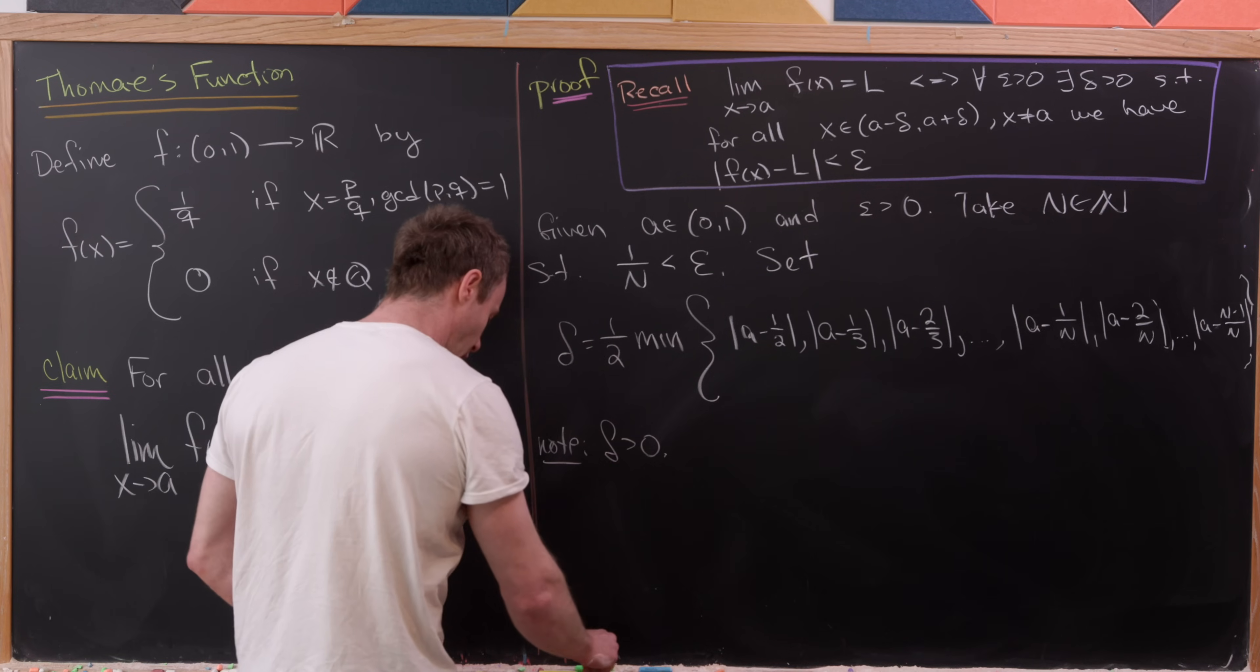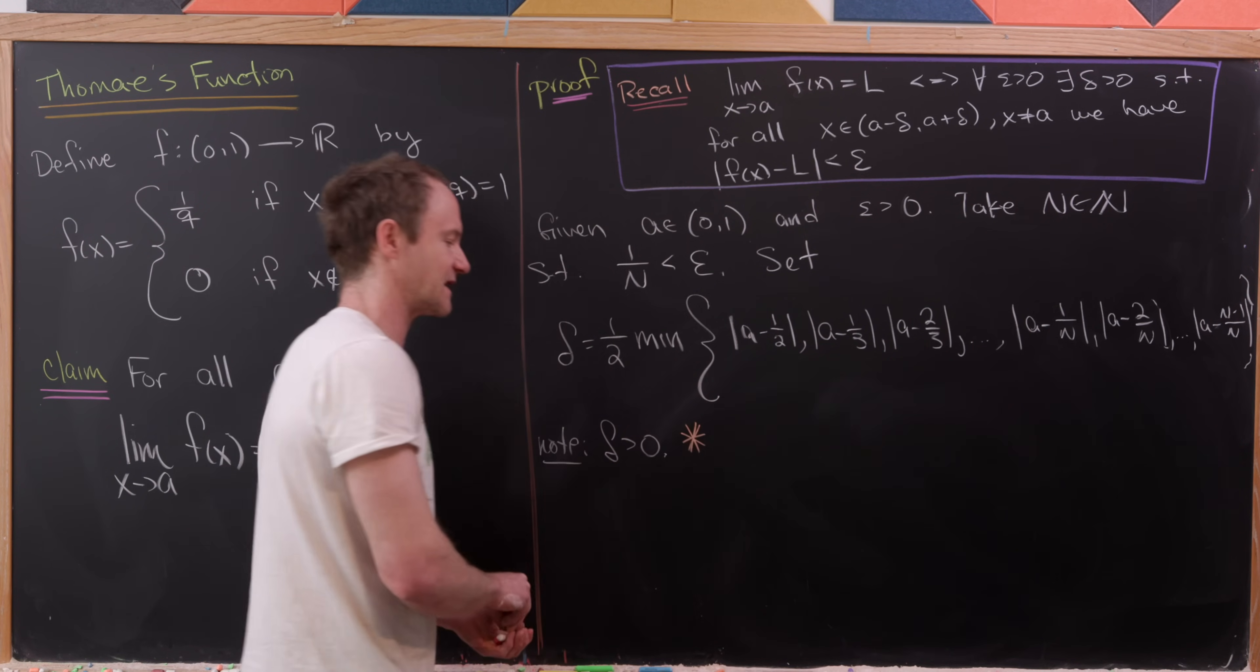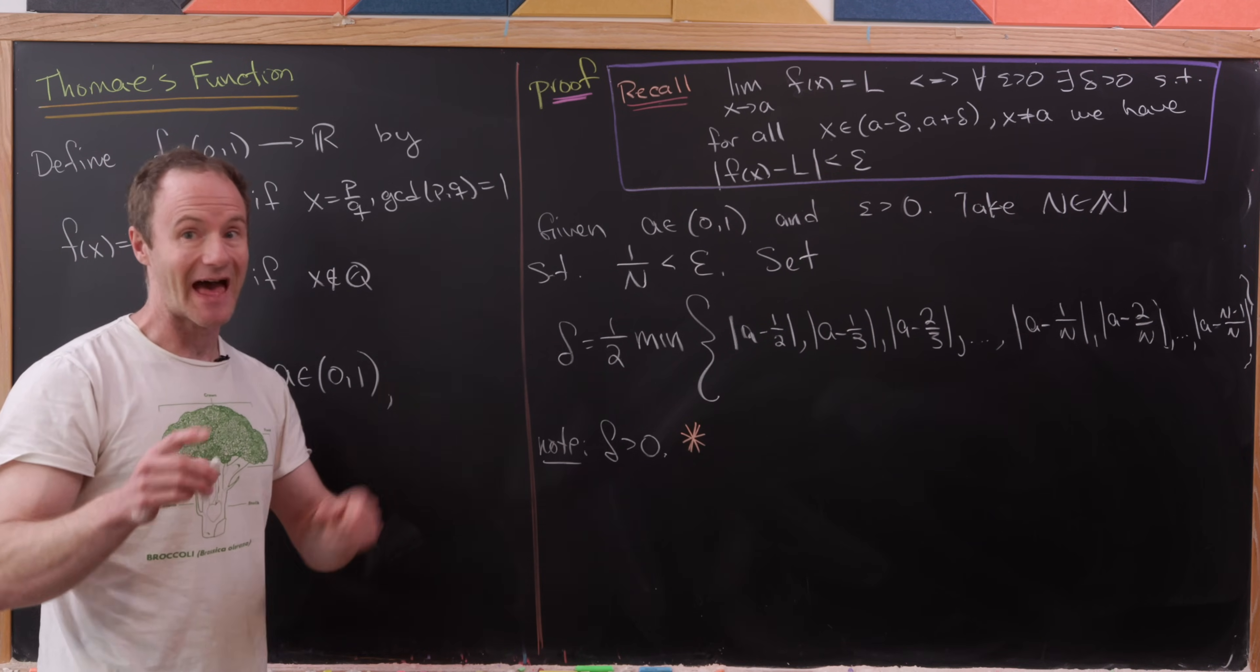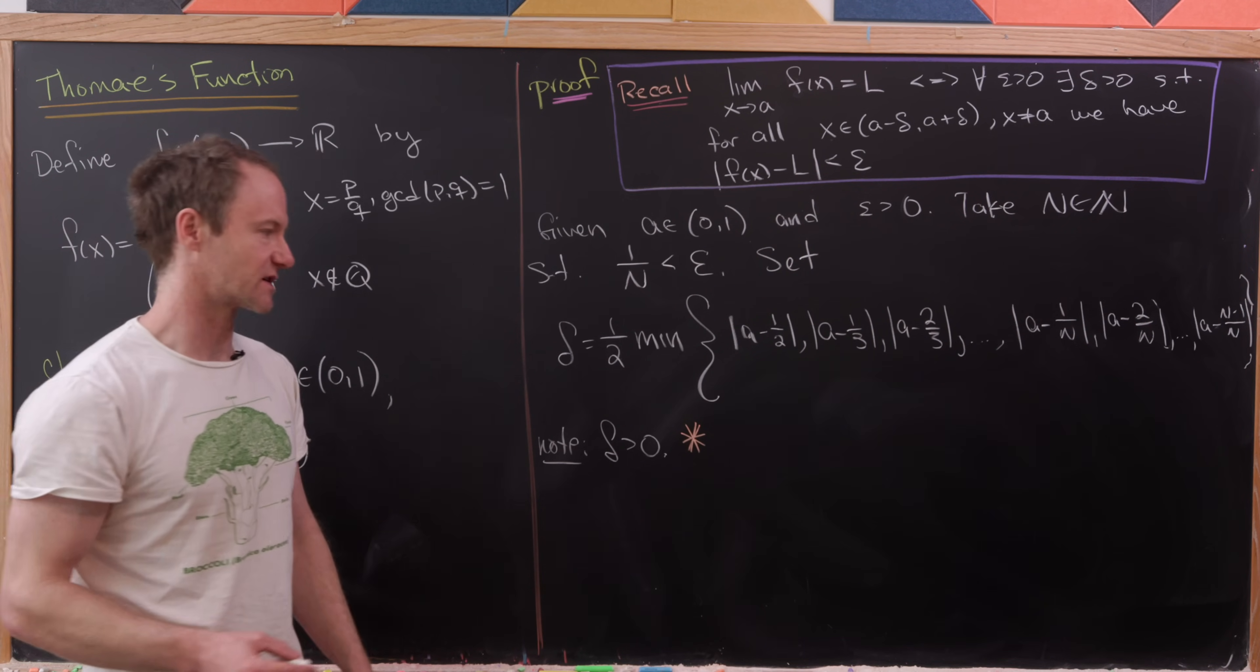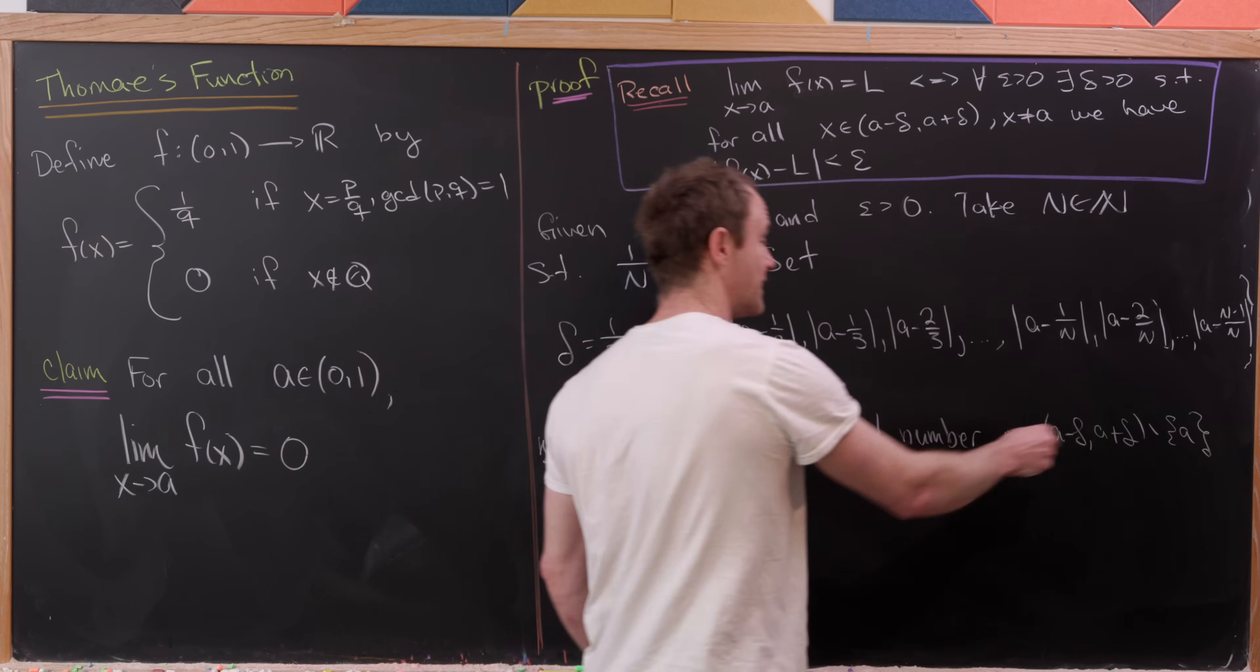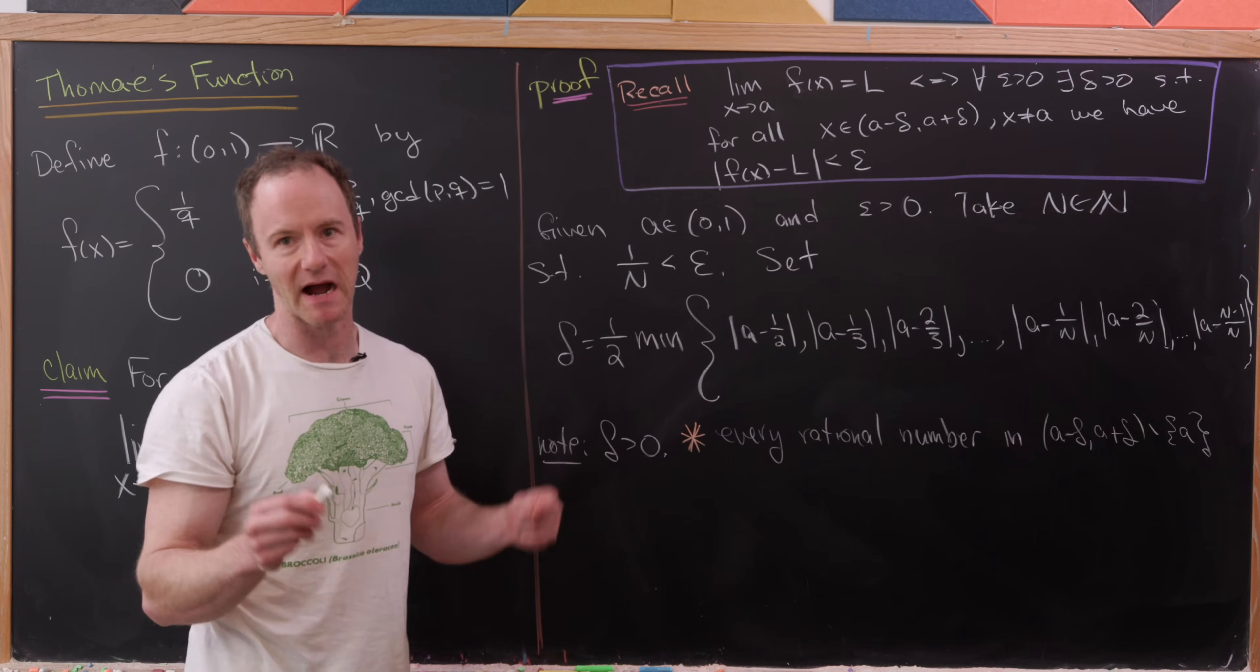Okay, so what's the point of this big, crazy way of defining delta? Well, it essentially carefully does that idea of proof that we talked about before. And that is every rational number in the deleted neighborhood A minus delta to A plus delta minus that central point A has a denominator strictly bigger than N.